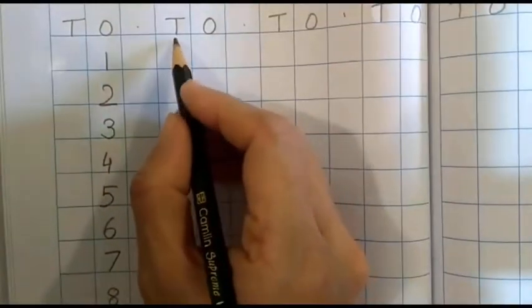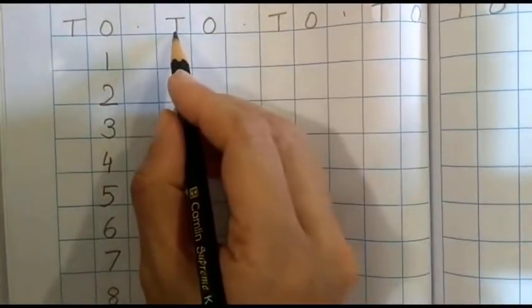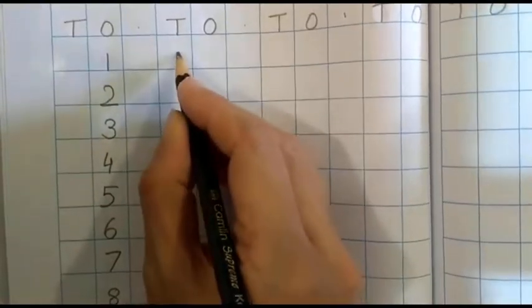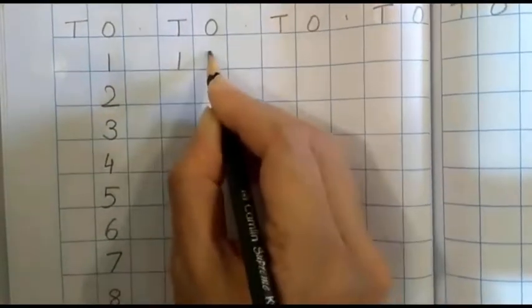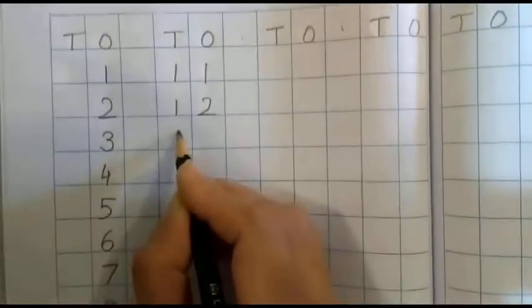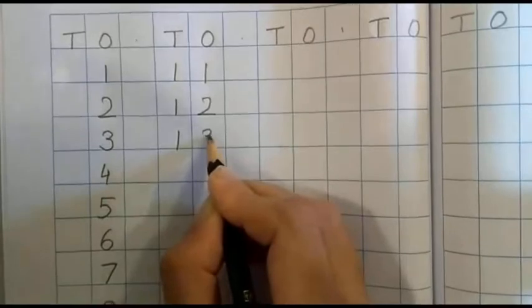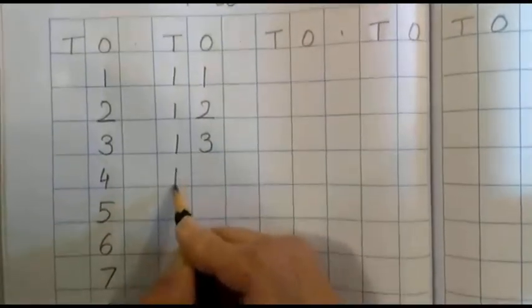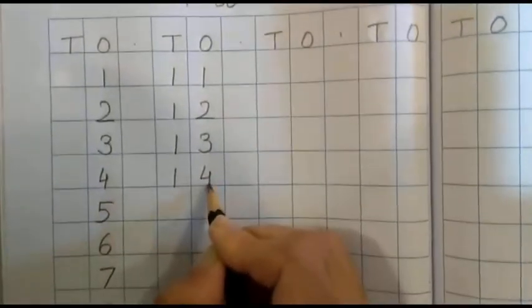After one zero ten, we will go to the next two T and O boxes. One one eleven, one two twelve, one three thirteen, one four fourteen.